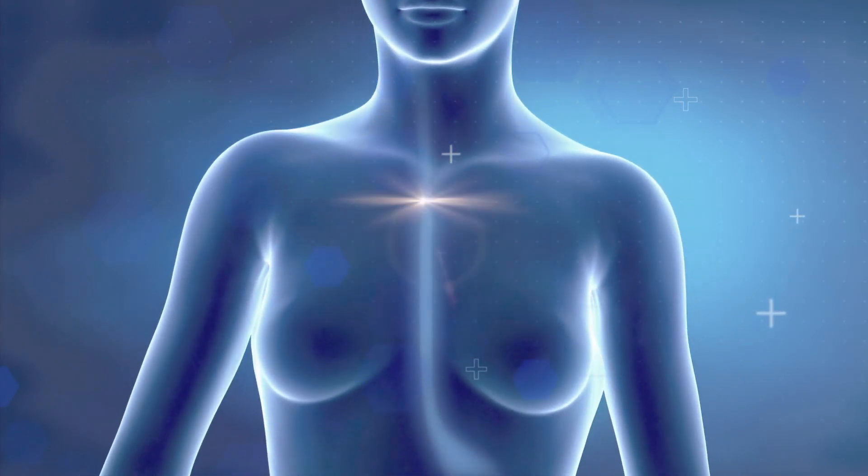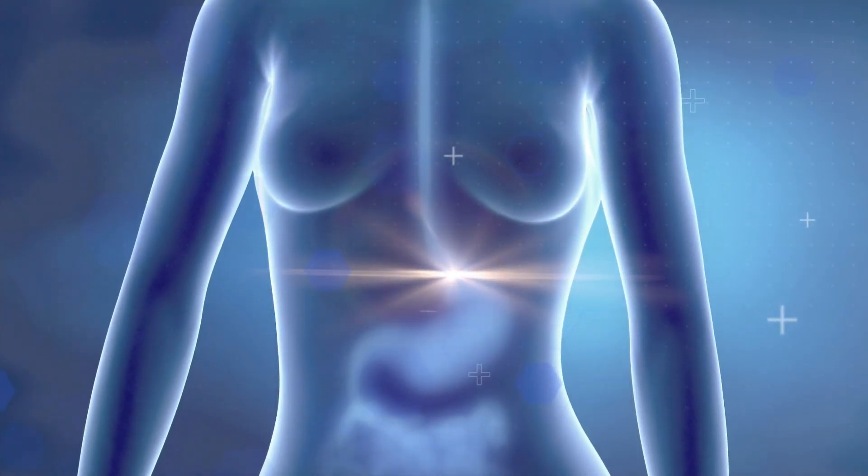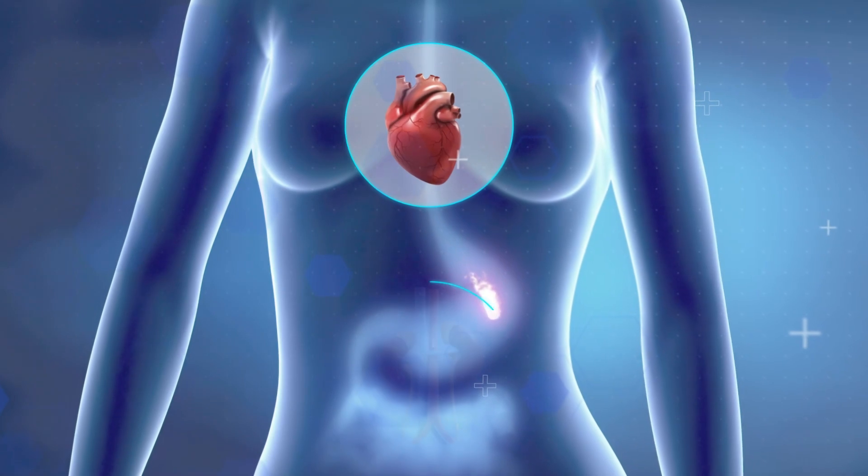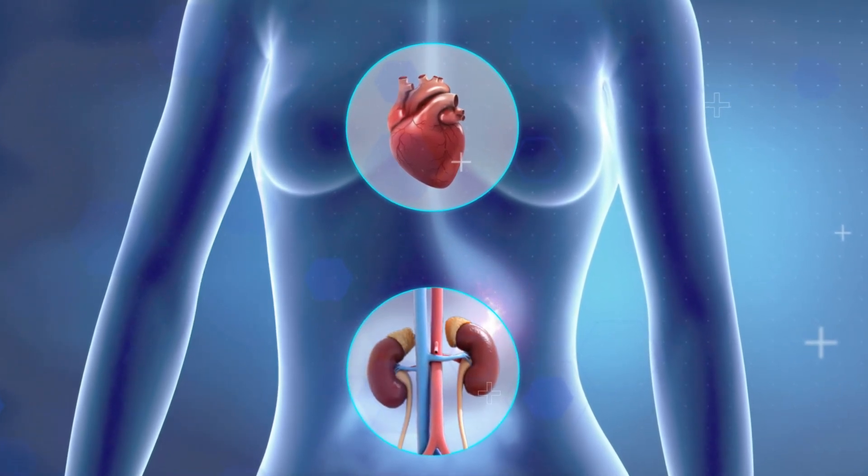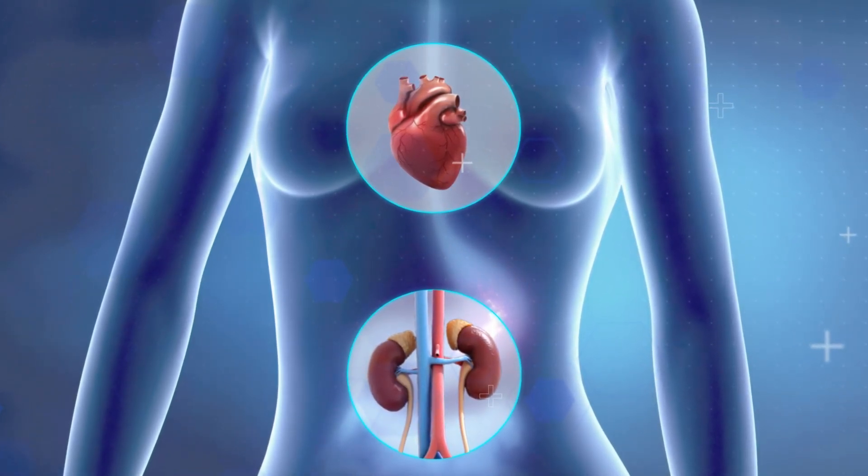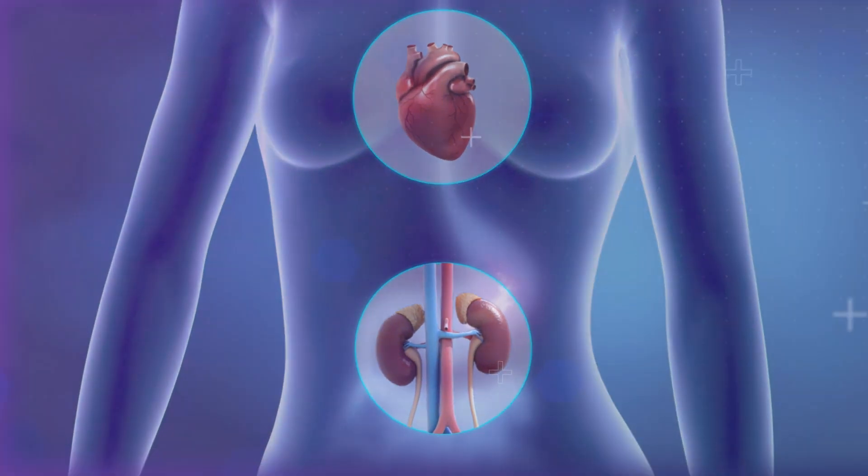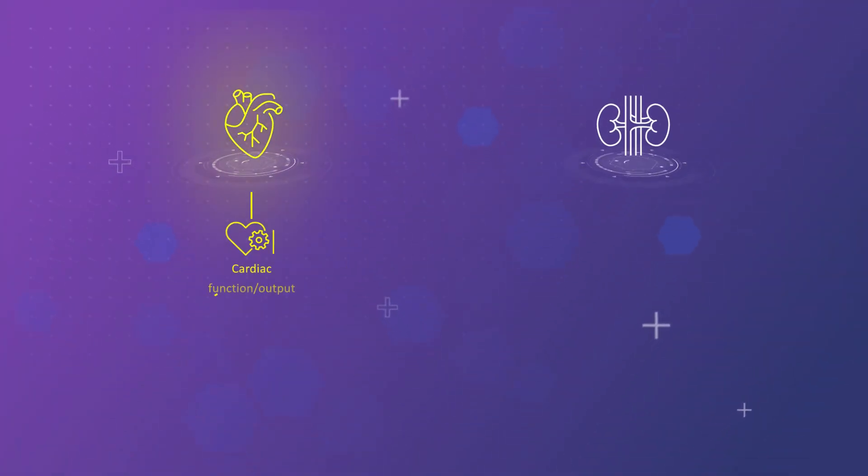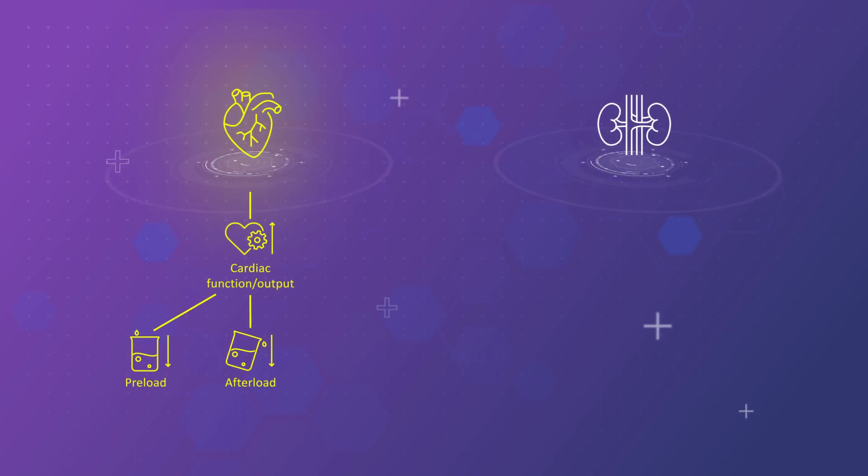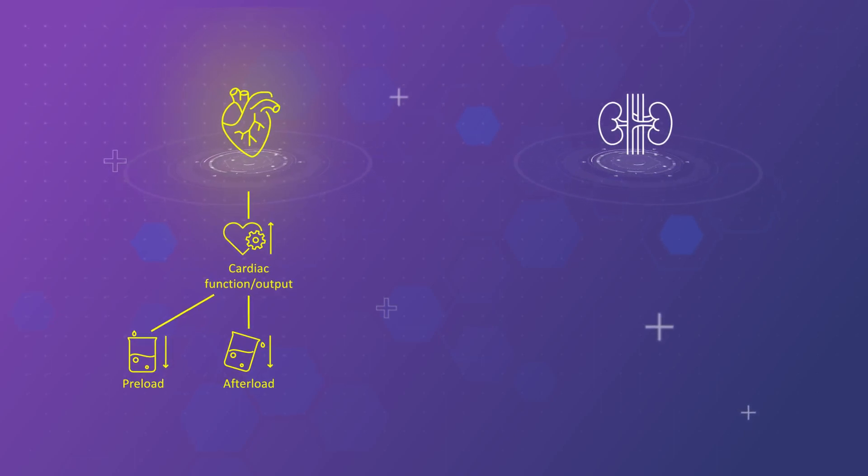Outside of their blood glucose effects, SGLT2Is have demonstrated cardiovascular and renal benefits through a variety of mechanisms that we are still working to understand. Studies indicate these drugs decrease cardiac preload and afterload and improve cardiac output by improving ventricular loading conditions.